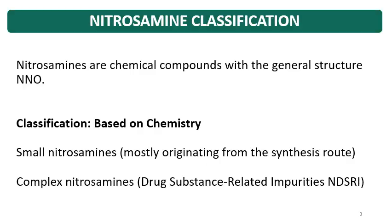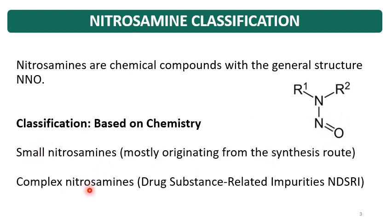Nitrosamines are classified based on their chemistry as small Nitrosamines and complex Nitrosamines. Nitrosamines are chemical compounds with a general structure containing N and O — the Nitroso group. Small Nitrosamines mostly originate from the synthesis route, while complex Nitrosamines have a larger structure or higher molecular weight. These complex Nitrosamines are drug substance-related impurities, also known as NDSRIs.